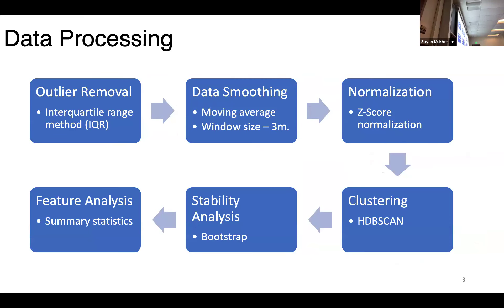Moving on, the well logs that we got had a number of data, so we did a bunch of processing. We did outlier removal, we did some data smoothing using a window size of three meters, then we did z-score normalization to bring all our parameters, which is density, P waves, and S waves, on a single scale.